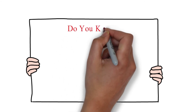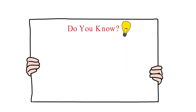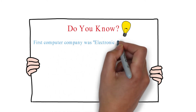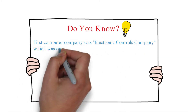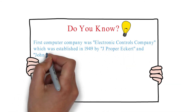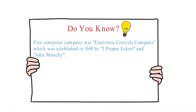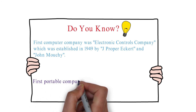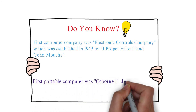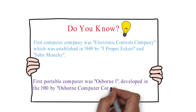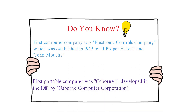Do you know? The first computer company was Electronic Controls Company, which was established in 1949 by J. Presper Eckert and John Mauchly. The first portable computer was Osborne 1, developed in 1981 by Osborne Computer Corporation.